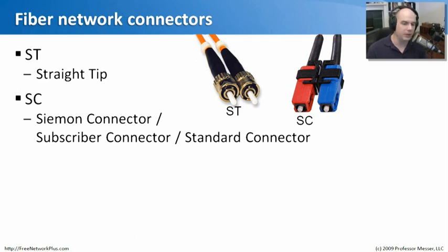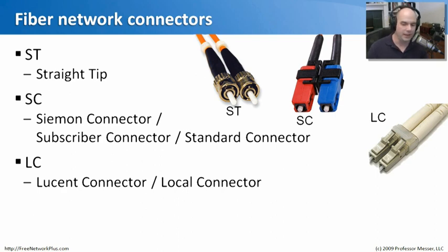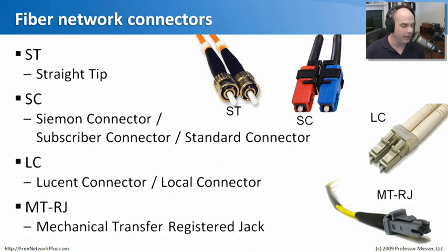The ST connector still took up a lot of real estate on devices, so we came up with smaller connectors called LC — Lucent connectors, also referred to as local connectors. They carry the same fiber connection but are very tightly paired and take up much less space than ST or SC connectors. An even smaller connection type is the MTRJ — Mechanical Transfer Registered Jack. MTRJ connections are among the most common on newer equipment today, taking up very little real estate and allowing many fiber connectors in a single piece of equipment.